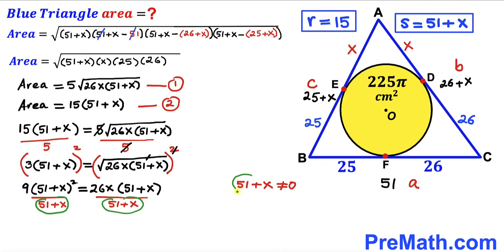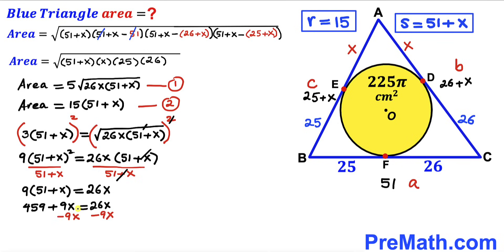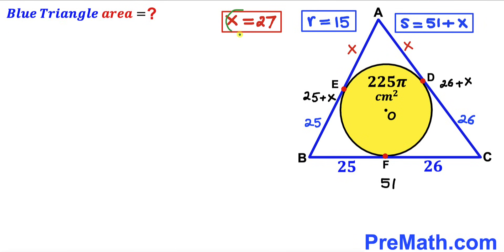Dividing both sides by (51 + x), noting that 51 + x ≠ 0, we get 9(51 + x) = 26x. Distributing: 459 + 9x = 26x. Subtracting 9x from both sides: 459 = 17x. Dividing by 17, x = 27.